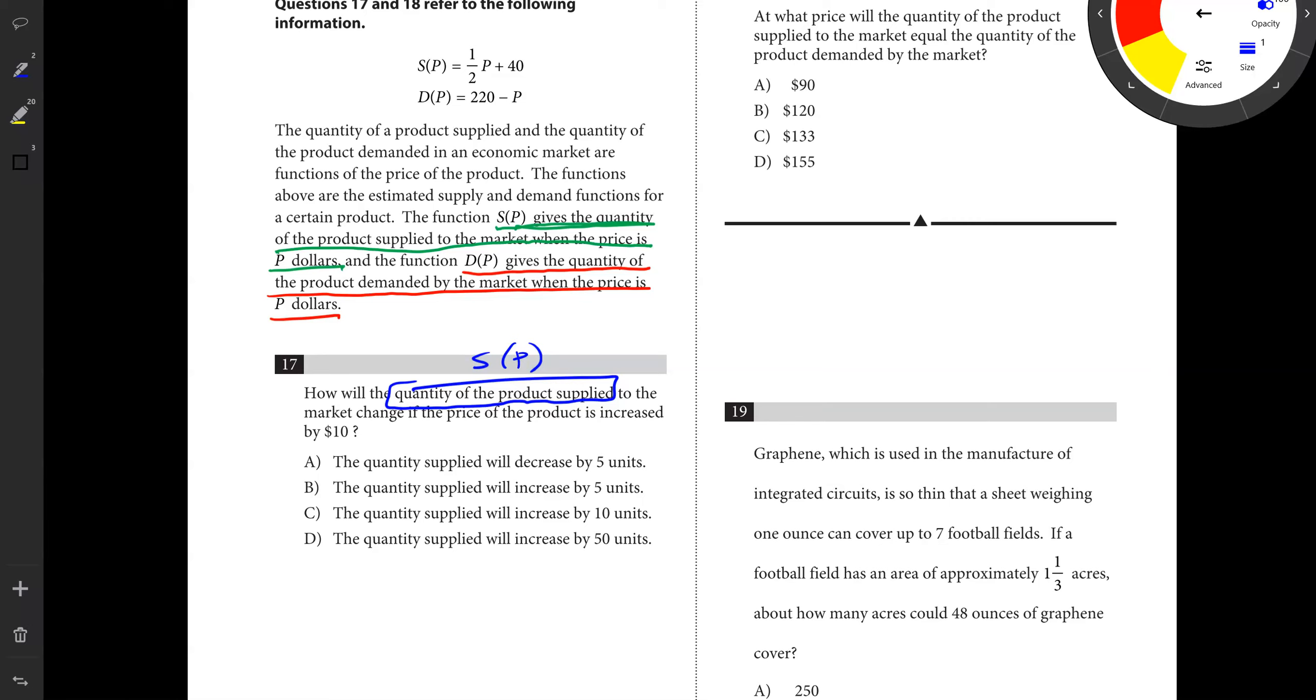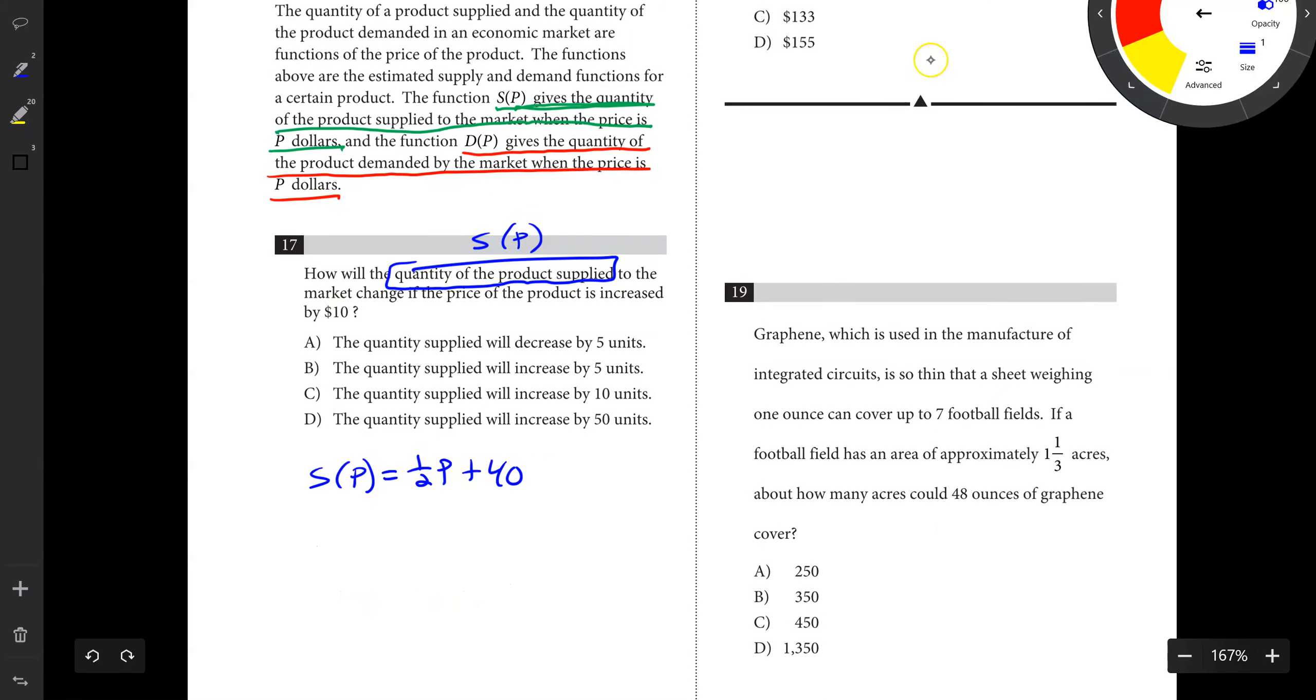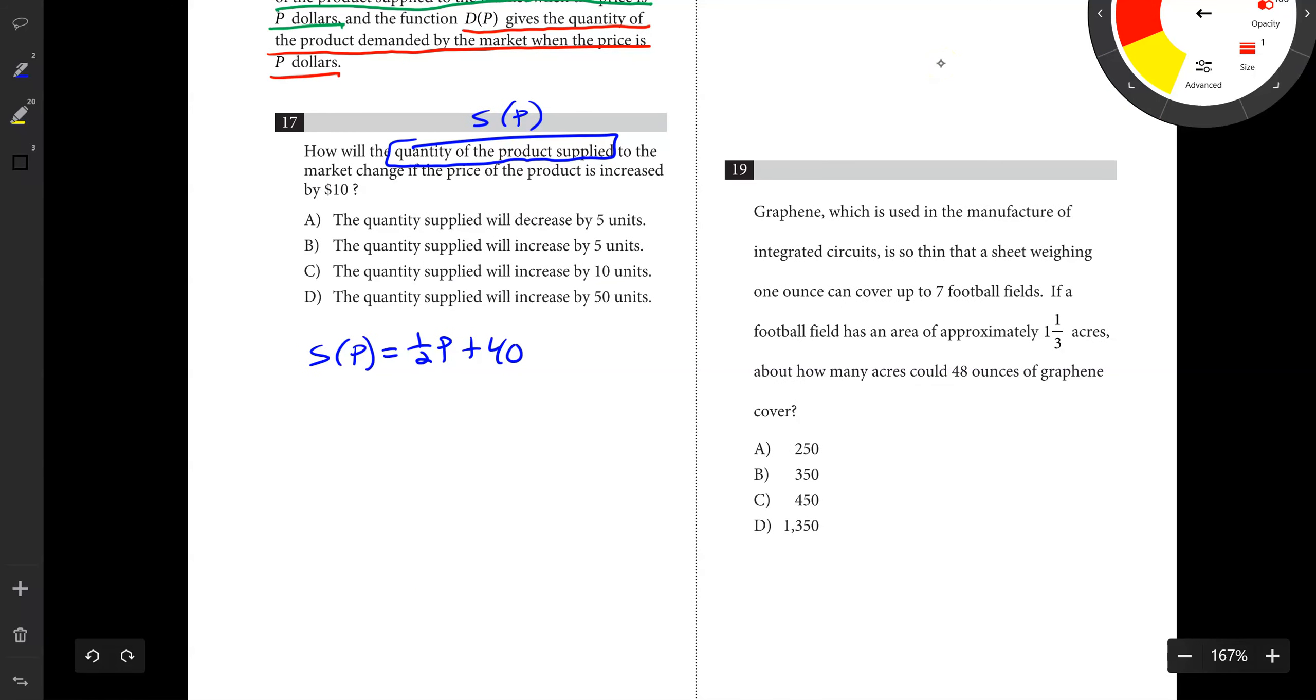Number 17 says, how will the quantity of the product supplied change if the price of the product increased by 10? We've got S of P equals one half P plus 40. If the price increased by 10, that's going to be this concept right here. Price is P, so it's essentially slope. One half times 10 gives us 5. So that's going to increase our price by 5. It's really an idea of a slope application.